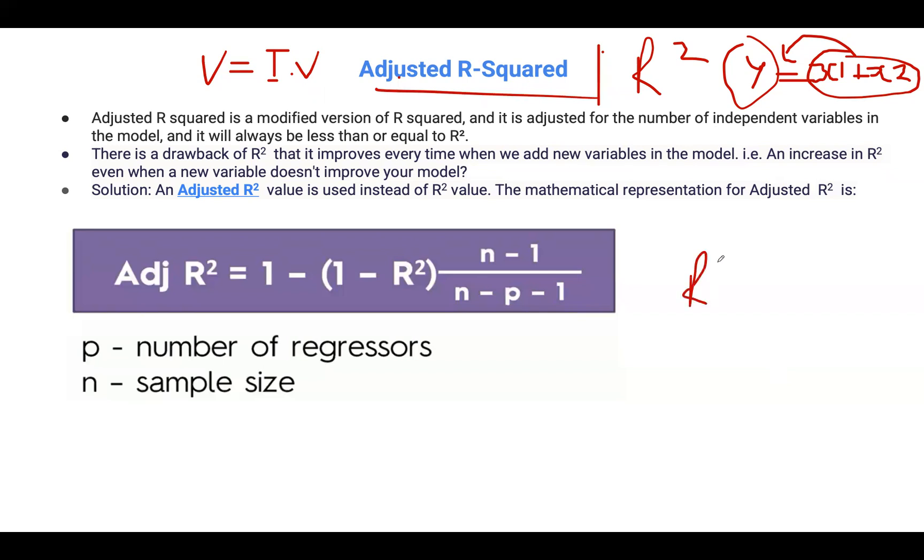Sometimes the R-squared tends to be very high or increases with an increase in the number of independent variables. This might be misleading. To provide a solution to this, we use adjusted R-squared.